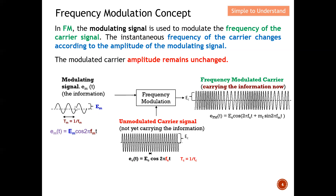When the modulating signal has the highest amplitude, we will have the highest frequency. When the modulating signal amplitude is the lowest, we have the lowest frequency. Basically, by looking at the frequency changes, we can plot back the modulating signal at the output.